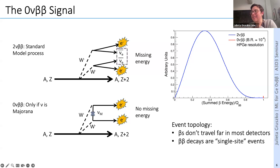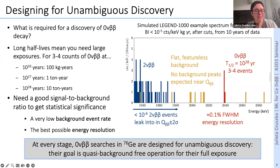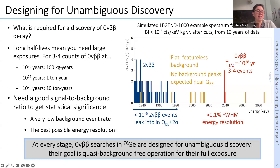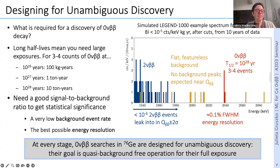For sensitivity considerations: if you want to discover neutrino-less double-beta decay, the minimum needed for a three-sigma discovery in the presence of background is about three or four counts. That translates directly to exposure requirements. To hit a 10²⁶-year half-life with three to four counts, you need 100 kilogram-years of experiment. For 10²⁷ years, you need a one-ton-year exposure. For 10²⁸ years, you need a 10-ton-year exposure. So we're talking about hundreds of kilograms to a ton of experimental material.